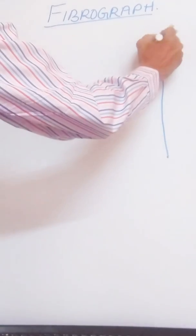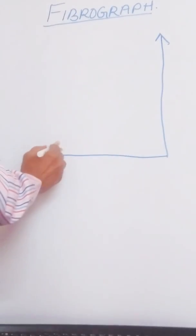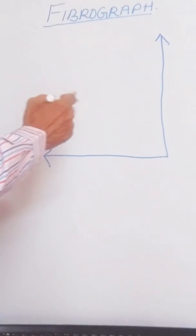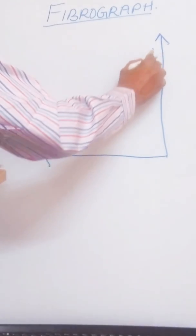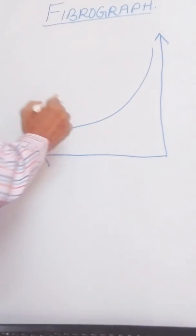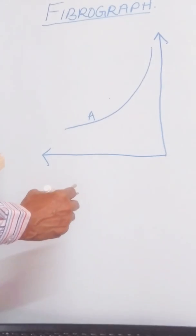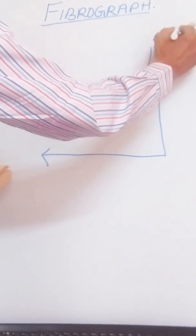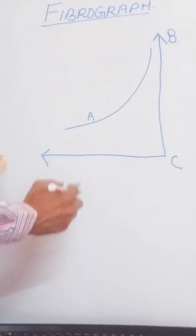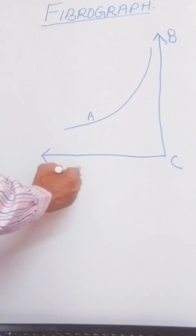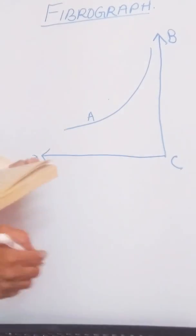As we have seen, the diagram which is given by our instrument fibrograph is the curve A. The axis VC and the axis CD are shown in the figure.